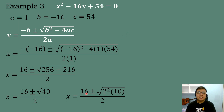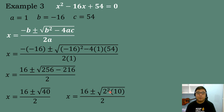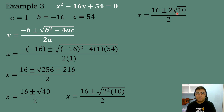We need to simplify the square root of 40 by finding factors where one is a perfect square. The factors of 40 are 4 times 10, and 4 is a perfect square. So 4 becomes 2 squared, times 10. The square root and the second power cancel, leaving 2 square root of 10, all over 2. Dividing: 16 divided by 2 equals 8, and 2 square root of 10 divided by 2 leaves just the square root of 10. So X equals 8 plus or minus the square root of 10.